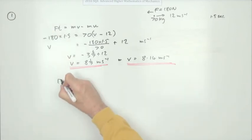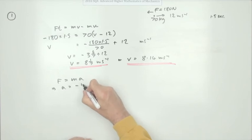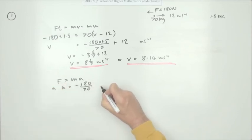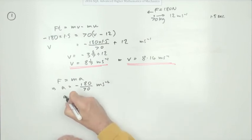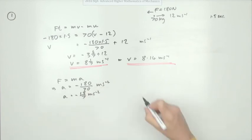You could have started with the other form f equals ma and then from that rearranged it to find the acceleration. Remember of course that's a negative - it's against the direction of motion. So that would be negative 180 divided by the mass which is divided by 70 meters per second squared, or we could just cancel it down a little bit to negative 18 upon 7 meters per second squared.